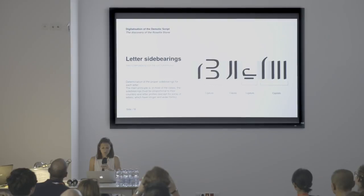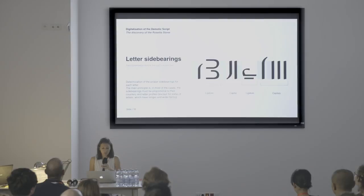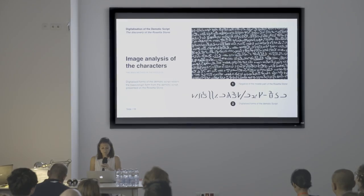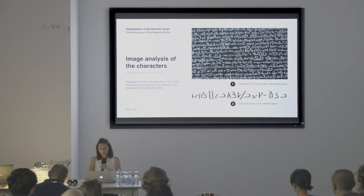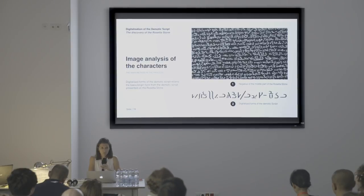Here you can see the difference in the proportions between the capitals and the lowercase letters. Letter side bearings is the time-consuming part of the whole process, because optically three values were defined between the characters. The first and smallest is between every ligature, then the middle value is between the capital and the ligature, and the biggest one is between the capitals. Document analysis was also a really challenging part — it took me one year to go through all the scripts and to find out how all the glyphs are written. This part was really difficult because it included a parallel visual comparison between the characters on the stone and the published translation of the characters.